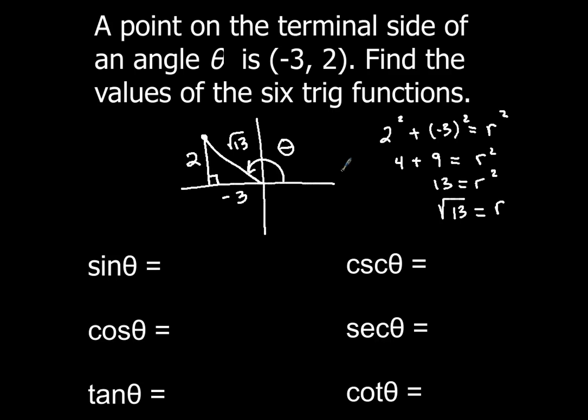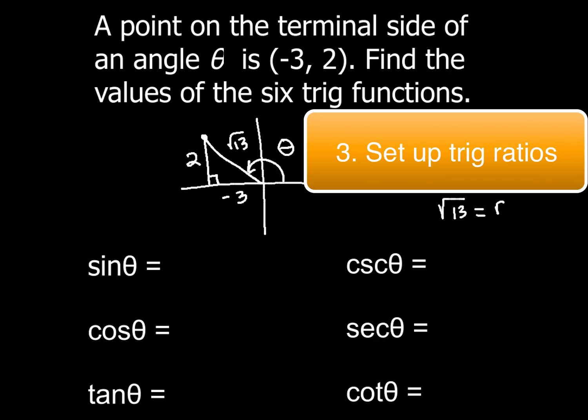Now sine remembers opposite over hypotenuse. If so, that would be 2/√13. But math teachers, you know, we all freak out. We don't like the square root of 13 on the bottom. You got to rationalize that. So when you do that, you'll get 2√13/13.